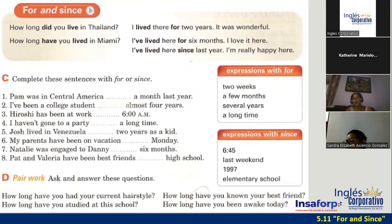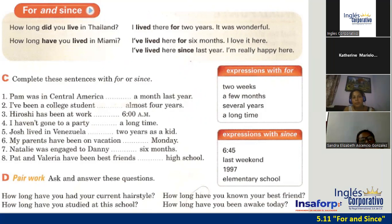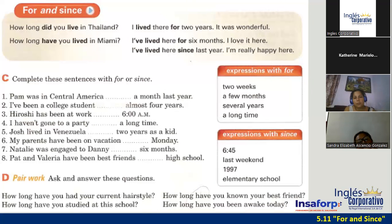It's 'since' — no es 'science.' Science es ciencia; since es 'desde.' For example: 'How long did you live in Thailand?' — 'I lived there for two years. It was wonderful.' 'How long have you lived in Miami?' — 'I've lived here for six months. I love it here.' / 'I've lived here since last year. I'm really happy here.'